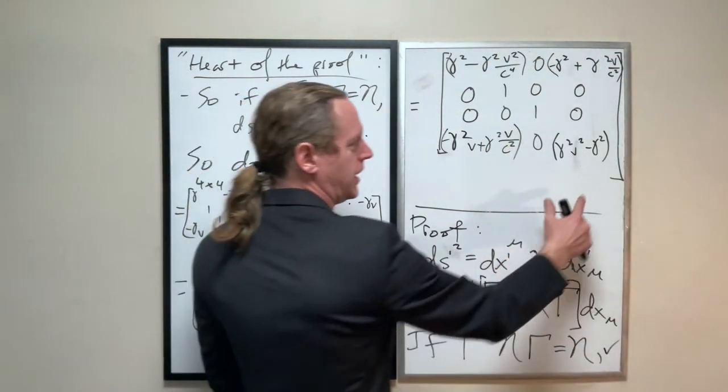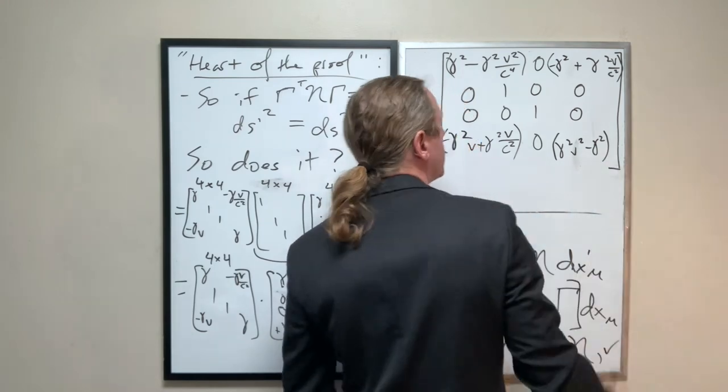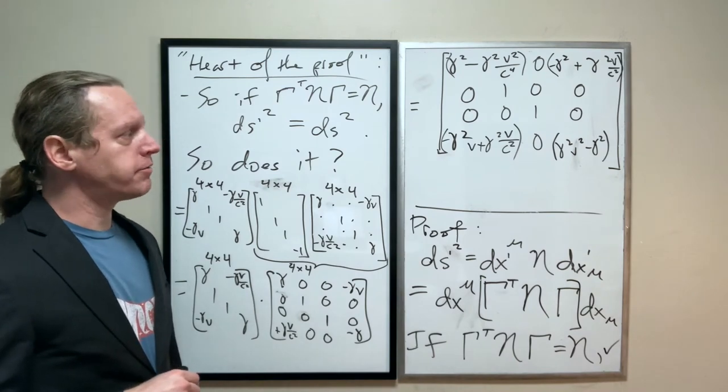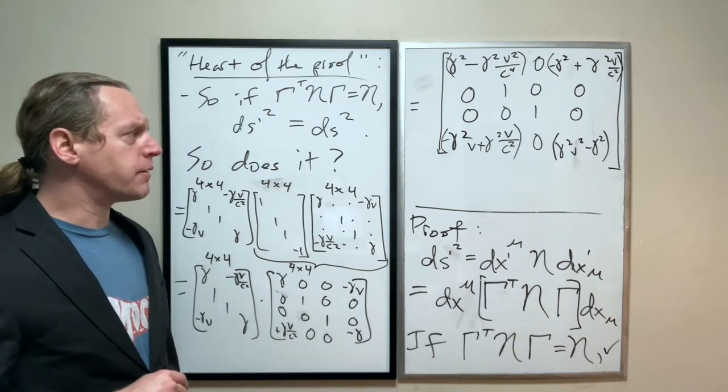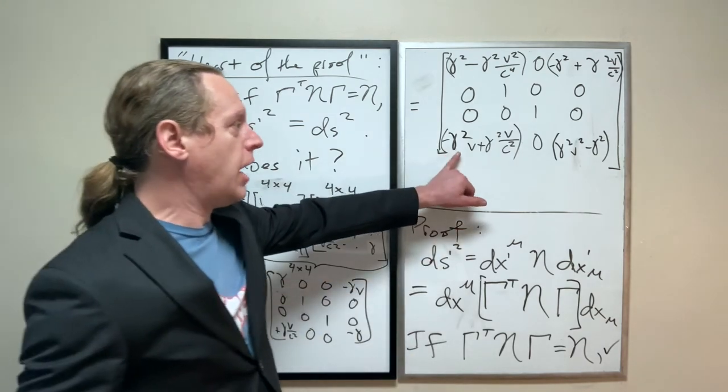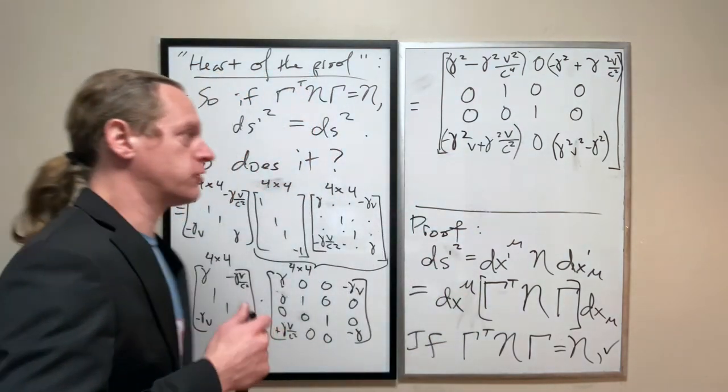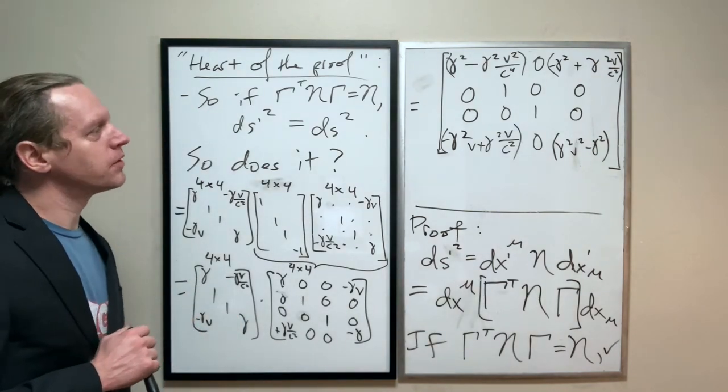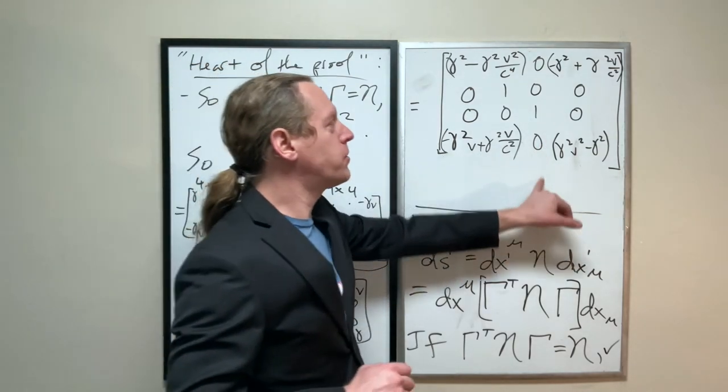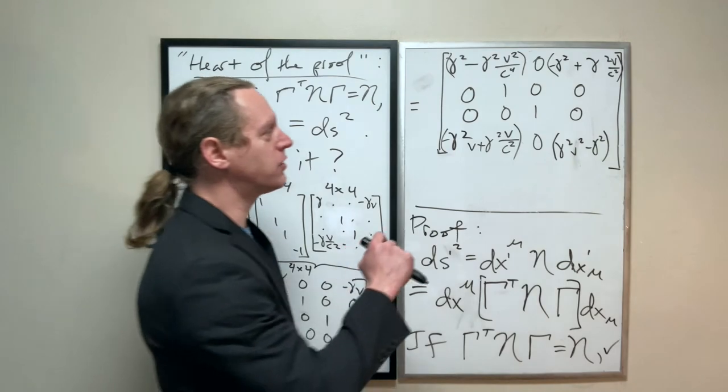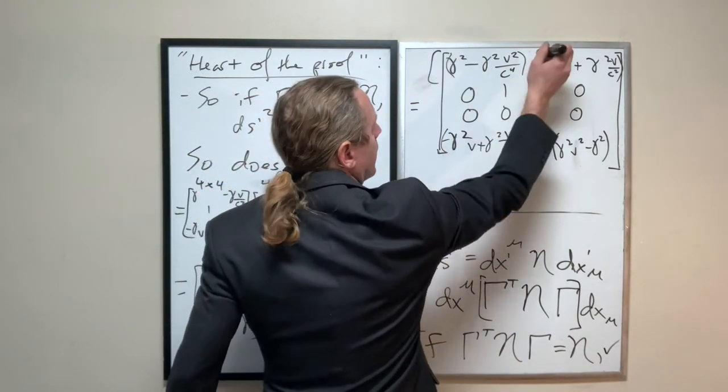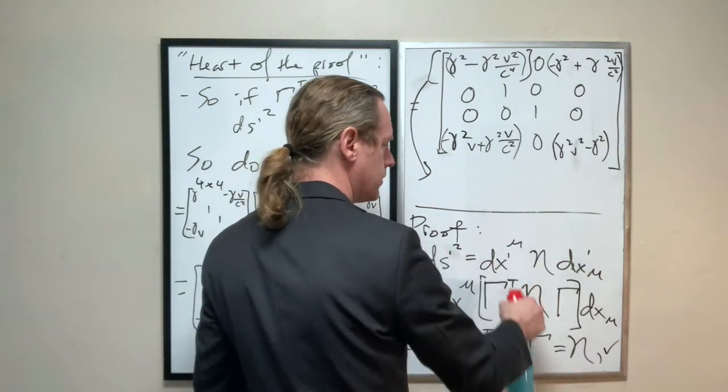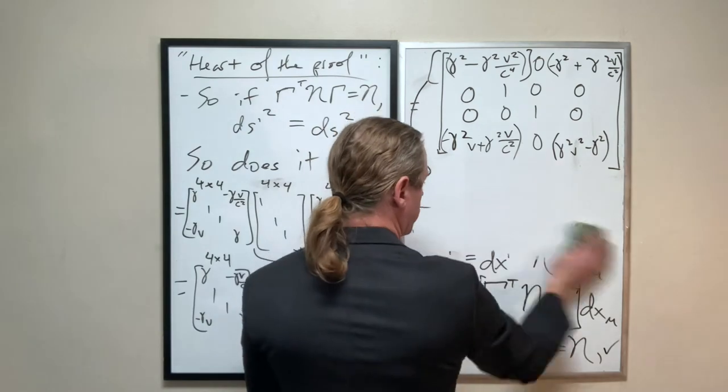So again, this is something that you really can't just memorize or anything like that. You have to work it out. Now there's a lot of some things that you see in common here. There's an awful lot of gamma squareds. There's an awful lot of v over c's, v squared over c squareds. But here's what I encourage you to do. I'm not going to prove the rest of this here directly, but I do want to give you one example. Let's just take this first element and I'm going to leave the rest of the three for you to work out on your own.